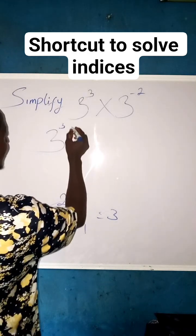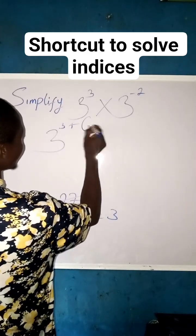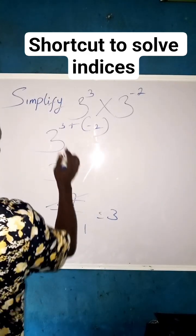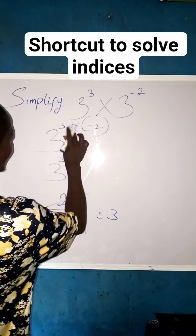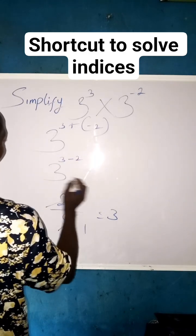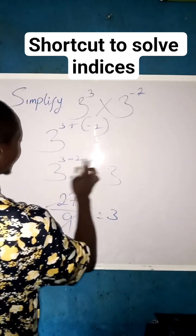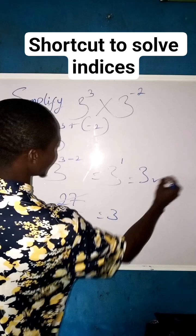We say 3 to the power 3 plus the power of this one which is minus 2, plus minus 2. Now 3, then plus times minus is minus. So equals 3 to the power, 3 minus 2 will give us 1, which is 3 to the power 1, which equals 3.